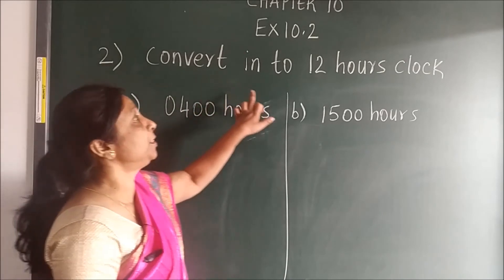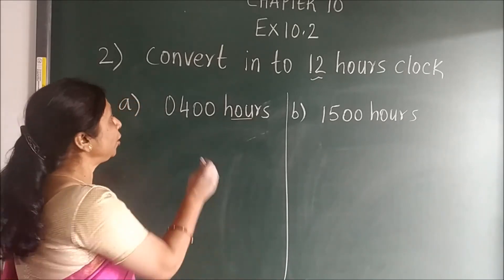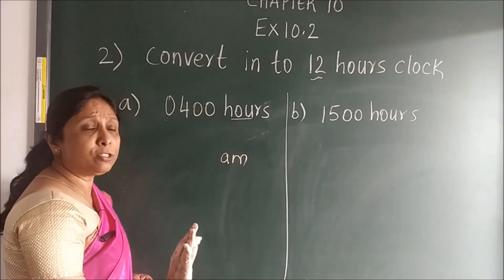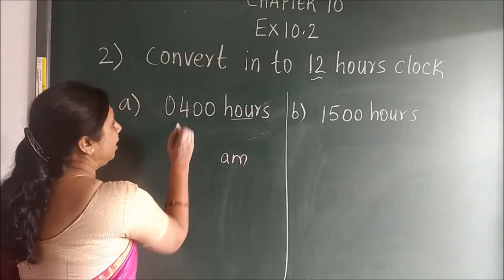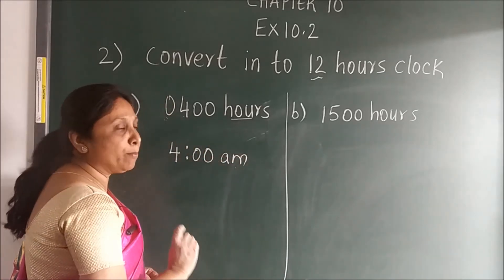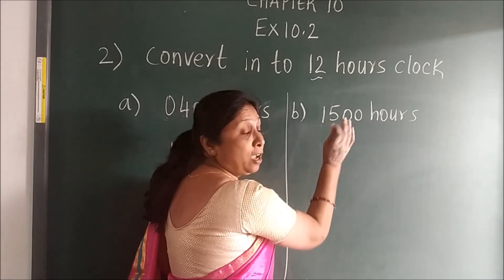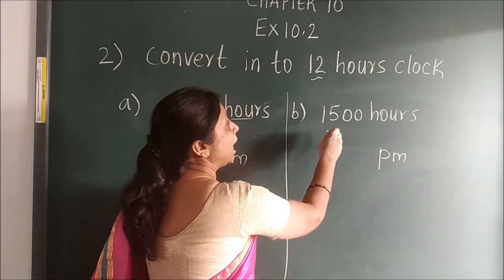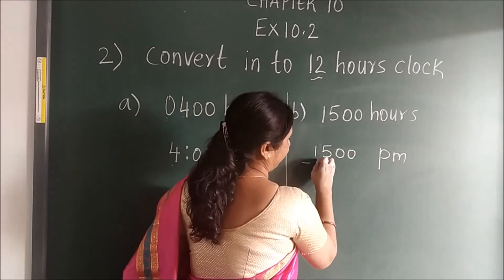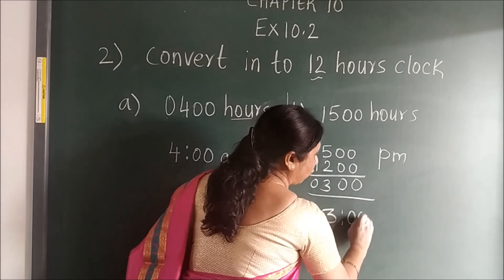Now convert into 12-hour clock. In 12-hour clock, what are the steps? This is in hours. You check the first number: when the first number is 0, immediately write AM. Nothing to think — directly write AM. Then write the time in this form with a dot and AM. Here, where there is no 0 in the starting, this will be in the form of PM. When it is PM, you have to subtract 12. When you subtract, you get your answer and write the final answer in this form.